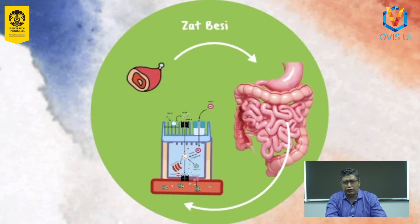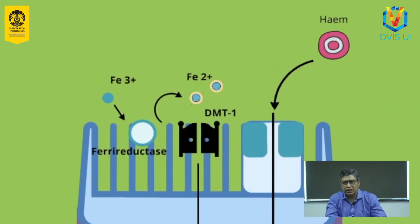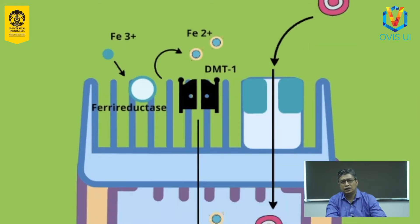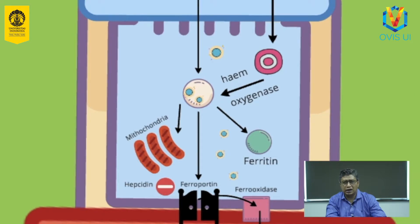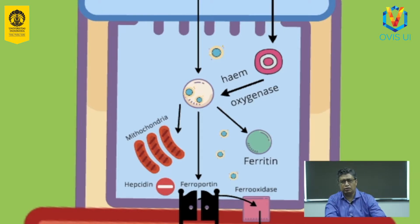Besi yang masuk dalam bentuk feri akan direduksi oleh enzim ferireduktas yang terdapat pada sisi apikal enterosit. Besi ferro kemudian masuk ke dalam enterosit melalui protein DMT1. Sementara itu besi hem diabsorpsi melalui transporter usus. Besi hem lebih mudah diabsorpsi dibandingkan besi ferro. Absorpsi besi di usus dapat ditingkatkan dengan kehadiran asam-asam untuk menjaga besi ferro dalam bentuk terlarut. Hem yang masuk ke dalam enterosit akan didegradasi oleh hem oksigenase untuk melepaskan besi ferro. Besi kemudian diikat oleh feritin intracellular dan ditransfer ke dalam sirkulasi melalui ferroportin yang terletak di sisi basolateral sel.